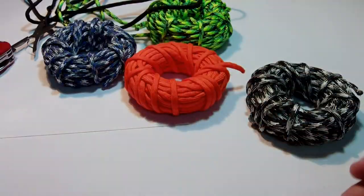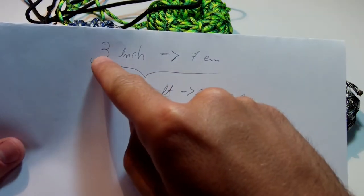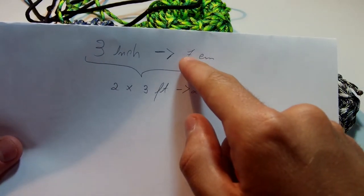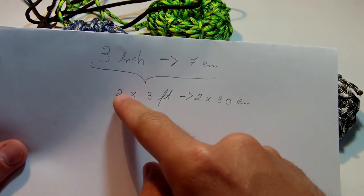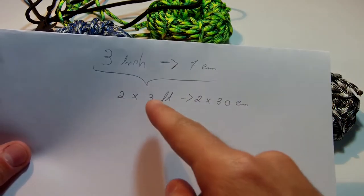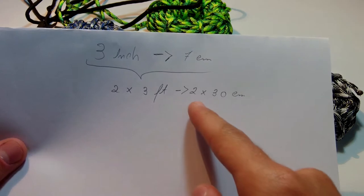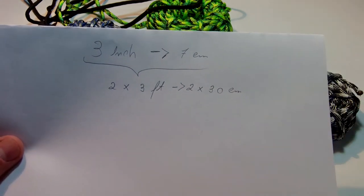To make this lanyard you need to know that three inches, which is seven centimeters paracord. To make the lanyard you need two times three feet, which is the two colors - black and the green - so two times three feet, which is the same thing as two times 30 centimeters. That's what we need to do this project.